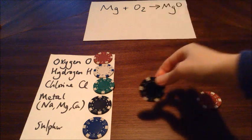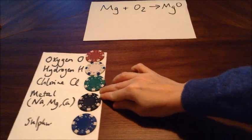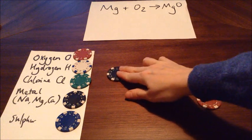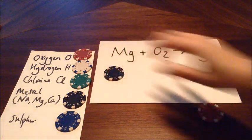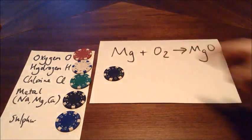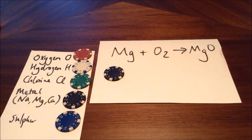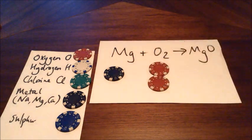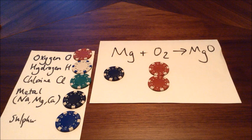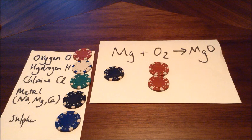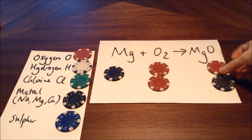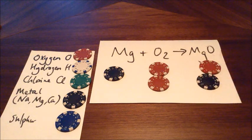So we're going to take one black chip for our magnesium. That little two next to oxygen means that there is an oxygen molecule made up of two oxygen atoms covalently bonded together. So for that I'm going to put down two red poker chips. There's our magnesium and there's our oxygen molecule. The third part is our magnesium oxide — the formula MgO means that one magnesium is bonded to one oxygen, so I'm going to have one red chip and one black chip.